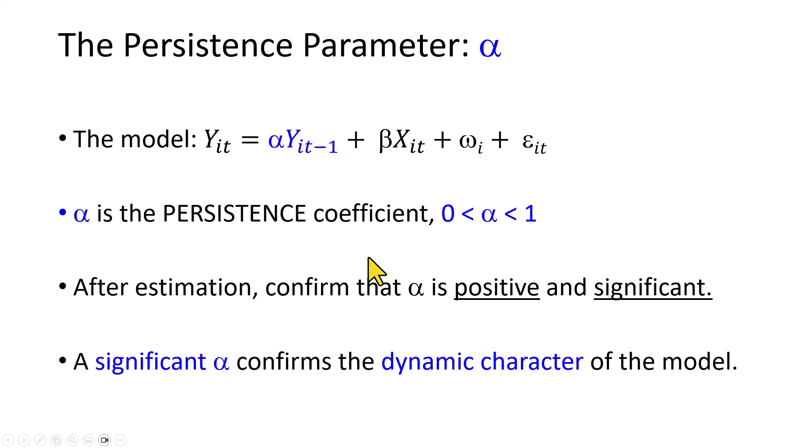The coefficient of the lagged dependent variable is the persistence parameter. The values are somewhere between 0 and 1. And so after estimation, it's necessary to ensure that the value of the coefficient is both positive and statistically significant, because a significant coefficient value is what confirms the dynamic character of the model. Otherwise, the use of a static model may well be sufficient.